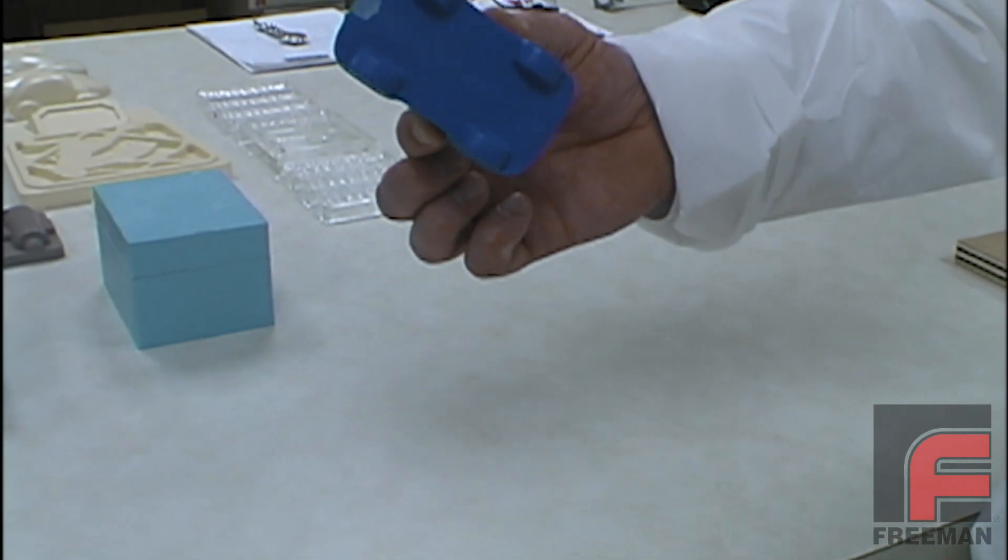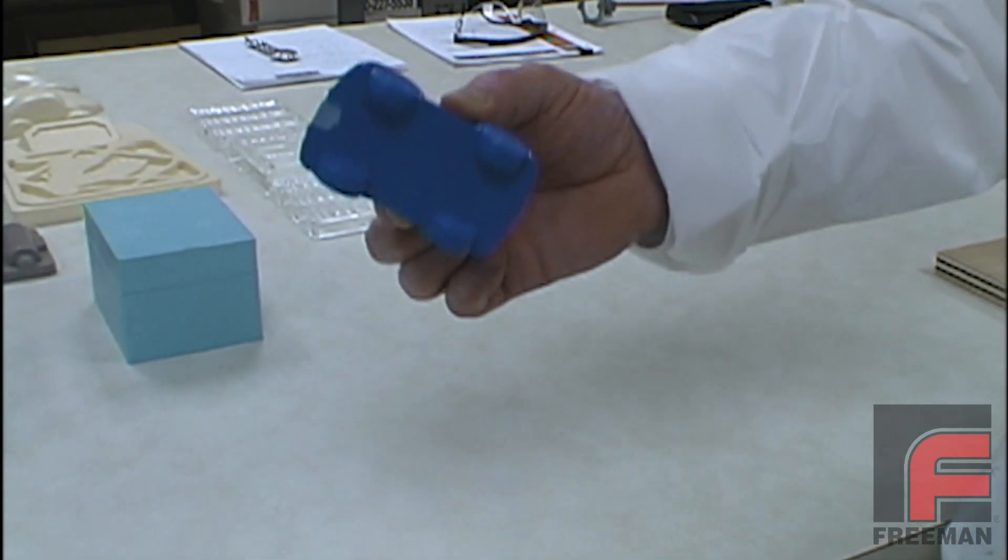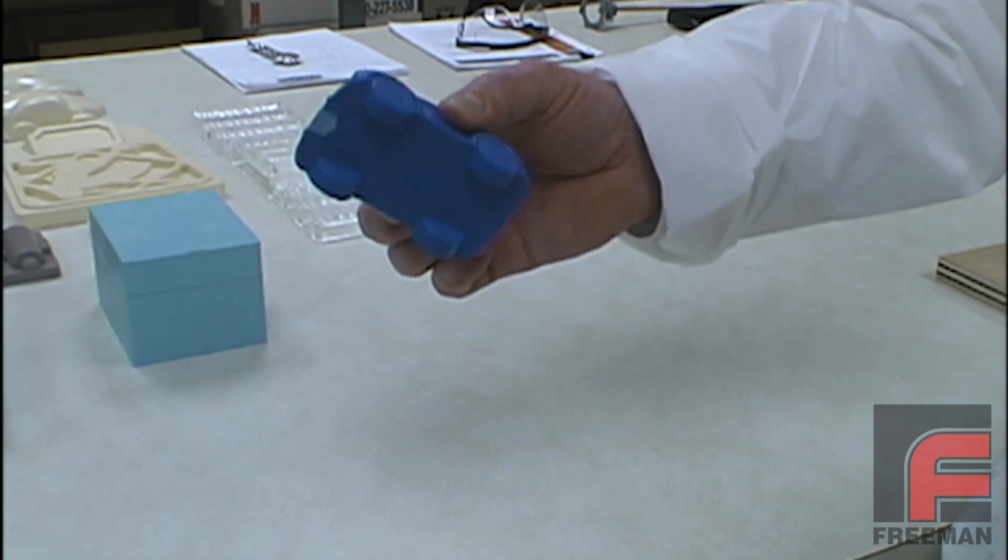Mass casting a part that does not have a flat side requires a more complex process involving the creation of a parting line.